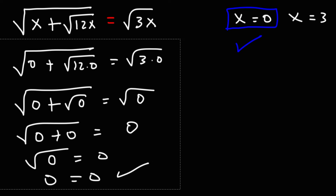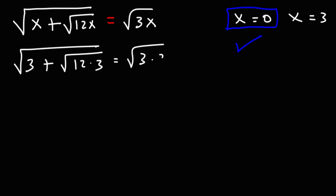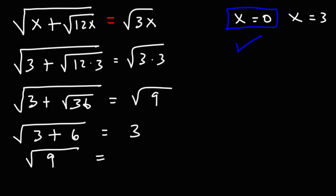Now let's try x equals 3. Replacing x with 3: 12 times 3 is 36, and 3 times 3 is 9. The square root of 36 is 6, and the square root of 9 is 3. Then 3 plus 6 is 9, and the square root of 9 on the left is also equal to 3. So this works as well. In this example, both solutions are correct.